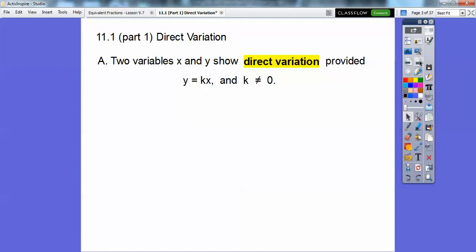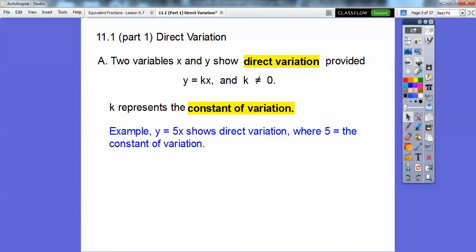So two variables, x and y, show direct variation provided that it's in the form of y equals kx. It's kind of like y equals mx plus b, but there's no b on this one right here. It's just y equals kx, and k can't be zero. They call it direct variation. And so k represents what's called the constant of variation. I don't know why they didn't choose a c for constant, but whatever.